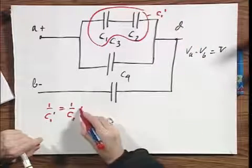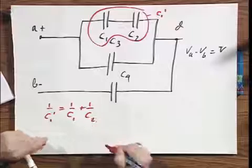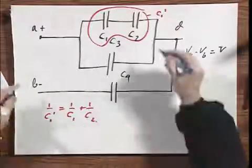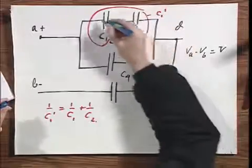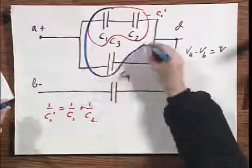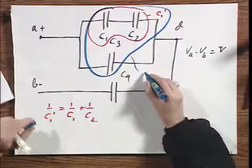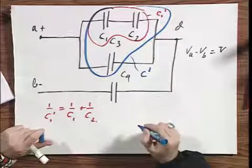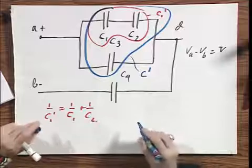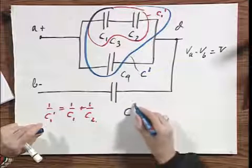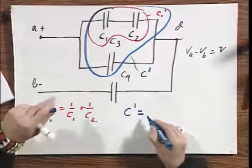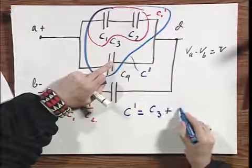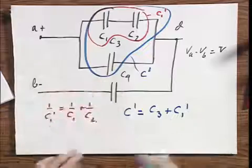And then I'm going to replace all three by an equivalent capacitor, which I will call C prime. And so we now have that C prime equals C3 plus C1 prime, which you just calculated.